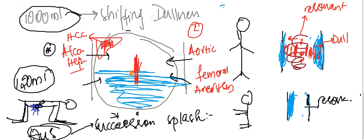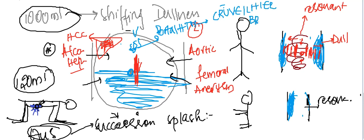There can also be a venous hum, heard between the xiphisternum and the umbilicus. This is because of developed collaterals due to portal hypertension. This venous hum is called Cruveilhier-Baumgarten syndrome. Additionally, friction rub can be heard in perisplenitis or splenitis. These are the different things you assess in abdominal examination. Thank you for watching.